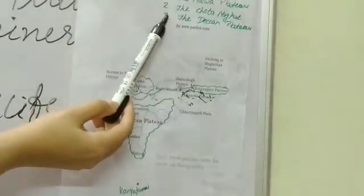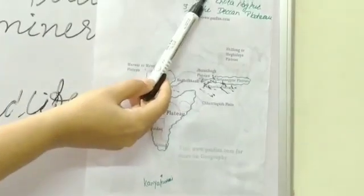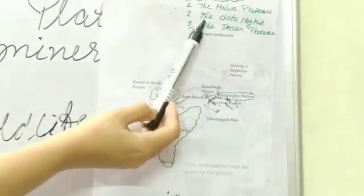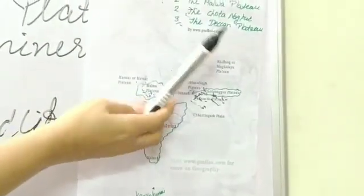My dear students, these are the three different plateaus. First is Malwa Plateau, next is Chhota Nagpur Plateau, and number three is Badekan Plateau. Here is our next topic.